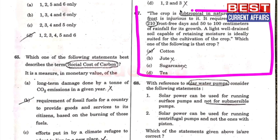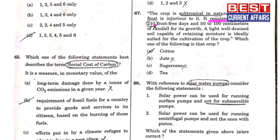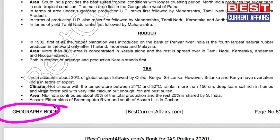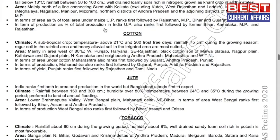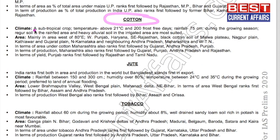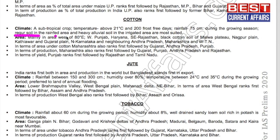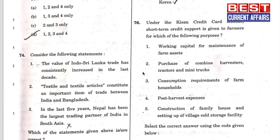This crop is subtropical in nature, requires at least 210 frost-free days and 50 to 100 centimeters of rainfall — the correct answer is cotton. From our geography book, page 81: cotton is a subtropical crop requiring about 210 frost-free days, rainfall less than 75 centimeters, and a regular growing season soil. A is the answer.